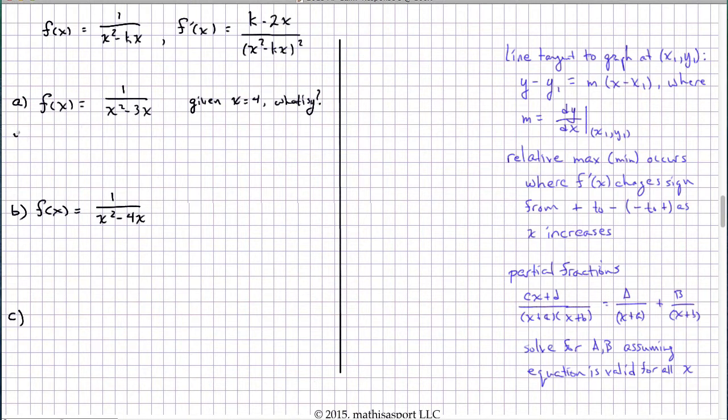We're just going to put that in the formula. We've got y equals 1 over 4 squared minus 3 times 4. So that's going to be 1 over 16 minus 12, which is 1 quarter. So the point of tangency is 4, 1 quarter.